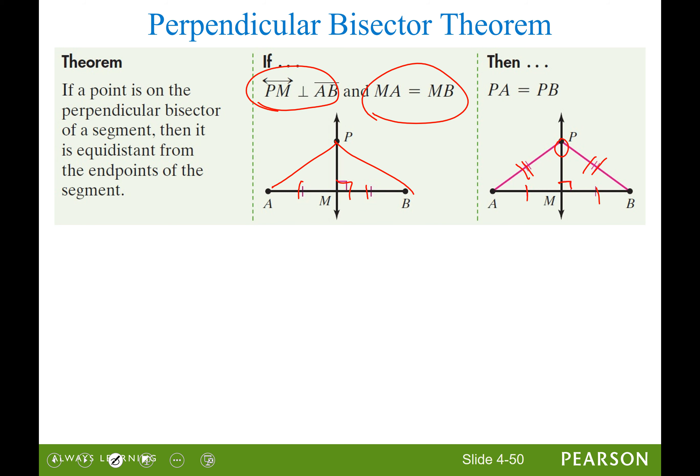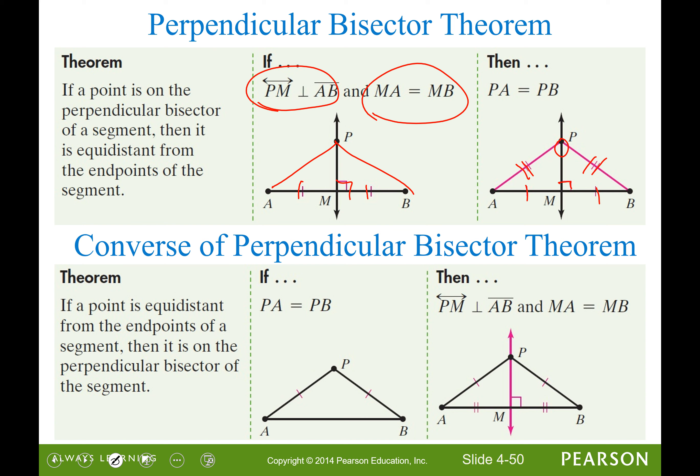The converse of the perpendicular bisector theorem is true as well. So if you start with an isosceles triangle, it turns out that if you take a bisector through point P and make it perpendicular it'll be 90 degrees and it'll cut this side exactly in half.